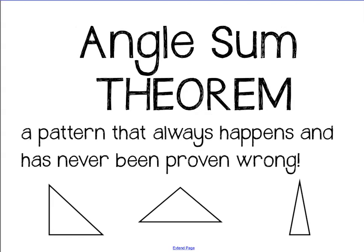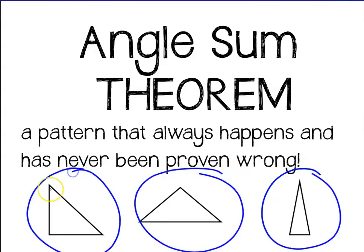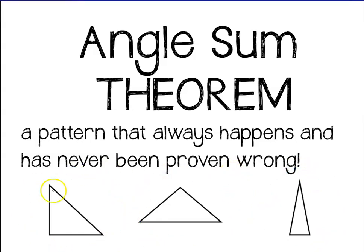So the angle sum theorem is a pattern that always happens with triangles. And the pattern is that if you add this angle with that angle and the third angle, if you add them all up, it always equals 180 degrees.